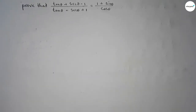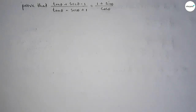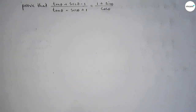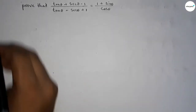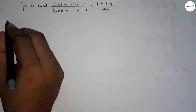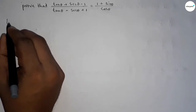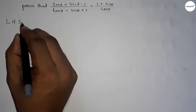Hi everyone, welcome to SHZ Classes. Today we have to prove that (tan θ + 6θ - 1) over (tan θ - 6θ + 1) equals (1 + sin θ) over cos θ. This is an important trigonometric math problem, so let's start. First of all, write down the left hand side.